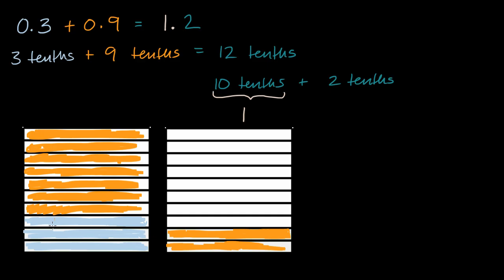Well, the 3 tenths plus the 7 tenths right over here, they made a whole. So this right over here is our 1. And then we also have another 2 tenths left over. And so this is where, this is our 0.2 or 2 tenths. So it's going to be 1 plus 2 tenths, which is 1.2.